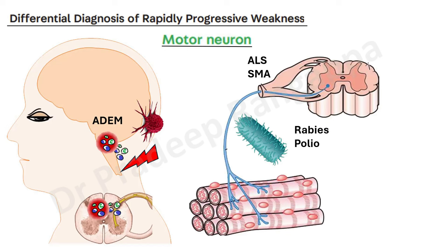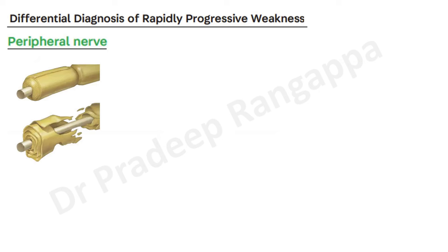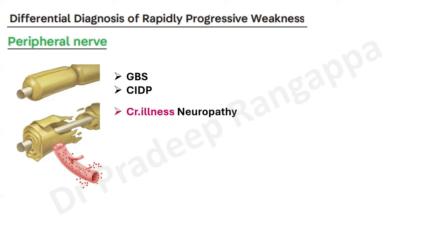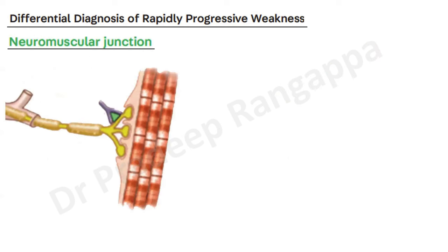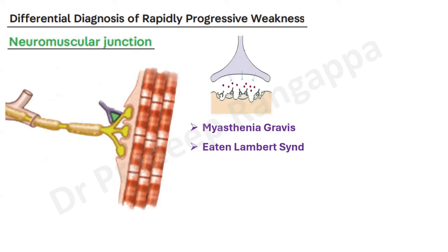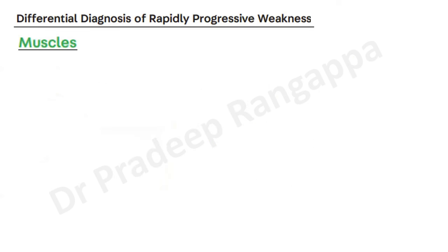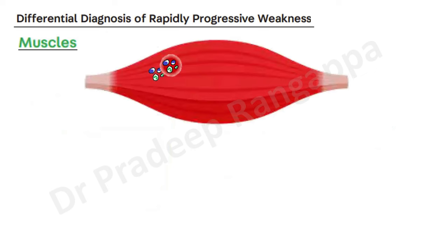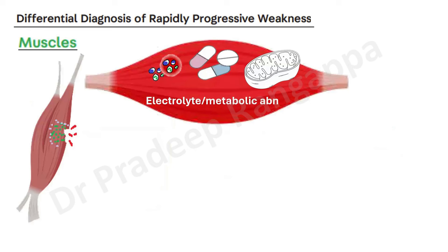When it comes to peripheral nerves, which is more commonly seen, the commonest is AIDP — Guillain-Barre syndrome — acute inflammatory demyelinating; we'll talk about this in detail. Also chronic inflammatory demyelinating polyneuropathy, vasculitis affecting peripheral nerves, critical illness neuropathy, porphyria, tick paralysis, and heavy metal toxicity. For neuromuscular junction, the commonest is myasthenia gravis, then Eaton-Lambert syndrome, OP compound toxicity, and botulism. Conditions affecting muscles include polymyositis, drug-induced myopathy, mitochondrial myopathy, electrolyte or metabolic abnormalities, rhabdomyolysis, and critical illness myopathy.